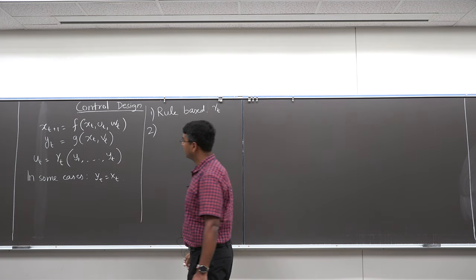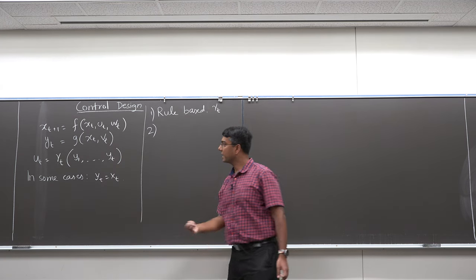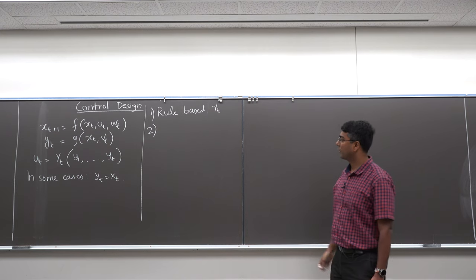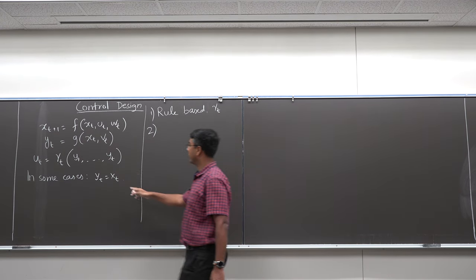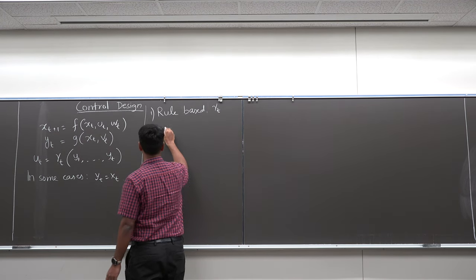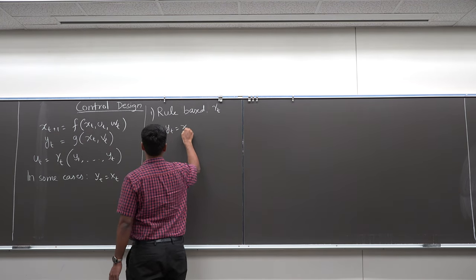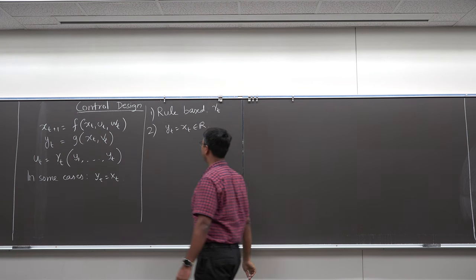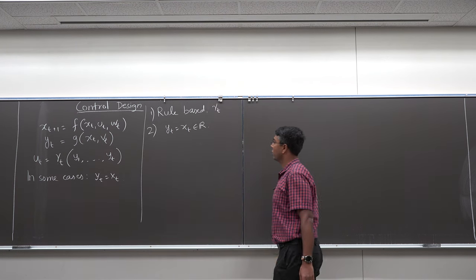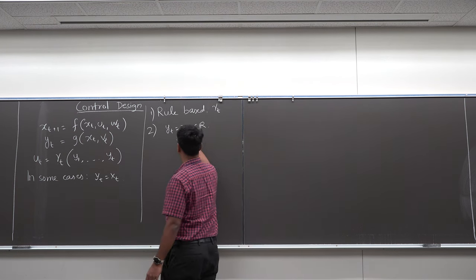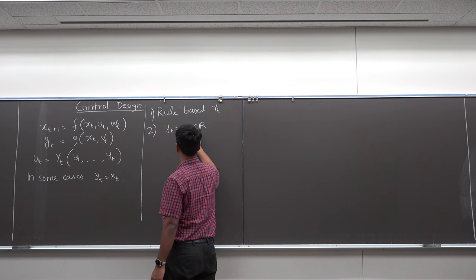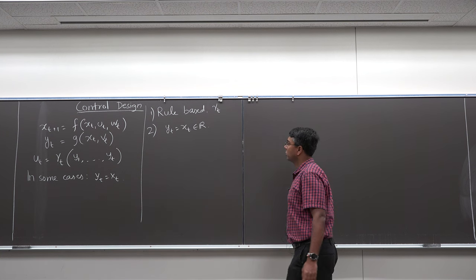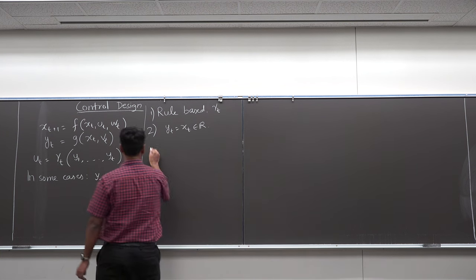The second class of control design techniques: I am going to assume y_t = x_t and that x_t is in ℝ — a scalar variable, not a vector. You could have something like a PID controller.